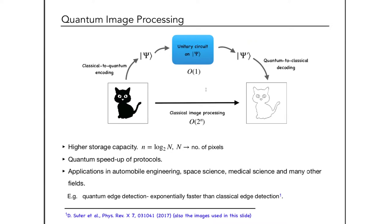The advantages of using a quantum protocol are: first, it takes logarithmically fewer quantum bits to encode the same information as classical systems; and second, the quantum speedup of protocols. For these reasons, quantum image processing has gained a lot of interest in recent days and has potential applications in many fields where image processing is necessary — for example, automobile engineering, space science, medical science, and many others.